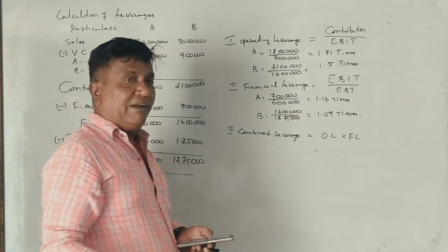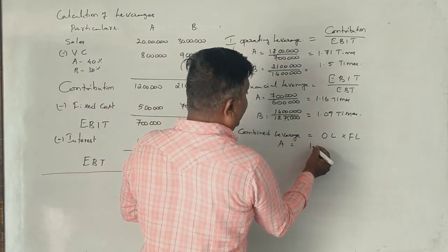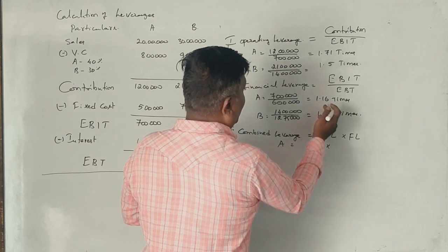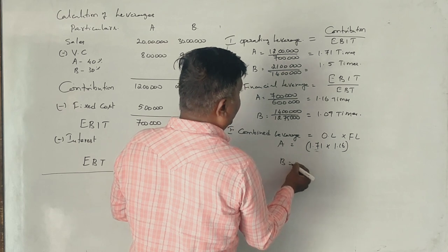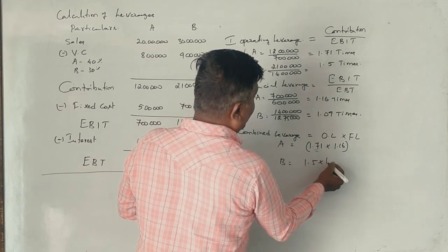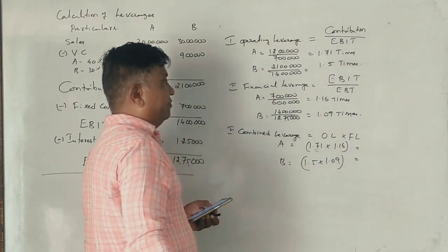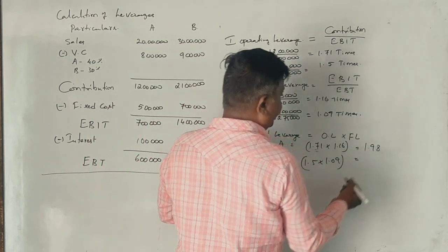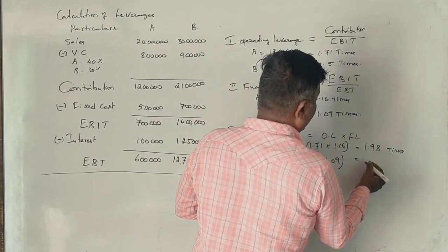Combined leverage: For Firm A, 1.71 times 1.16 equals 1.98. For Firm B, 1.5 times 1.09 equals 1.63.